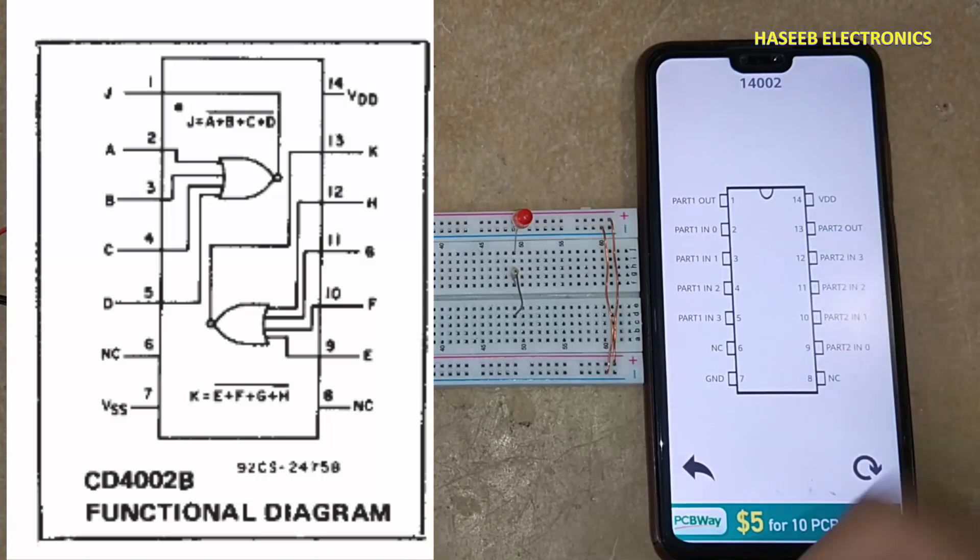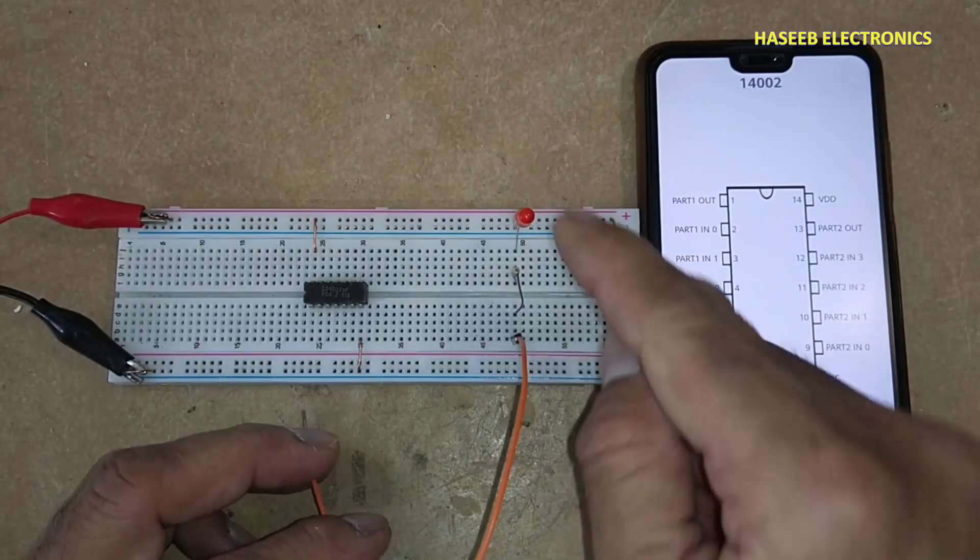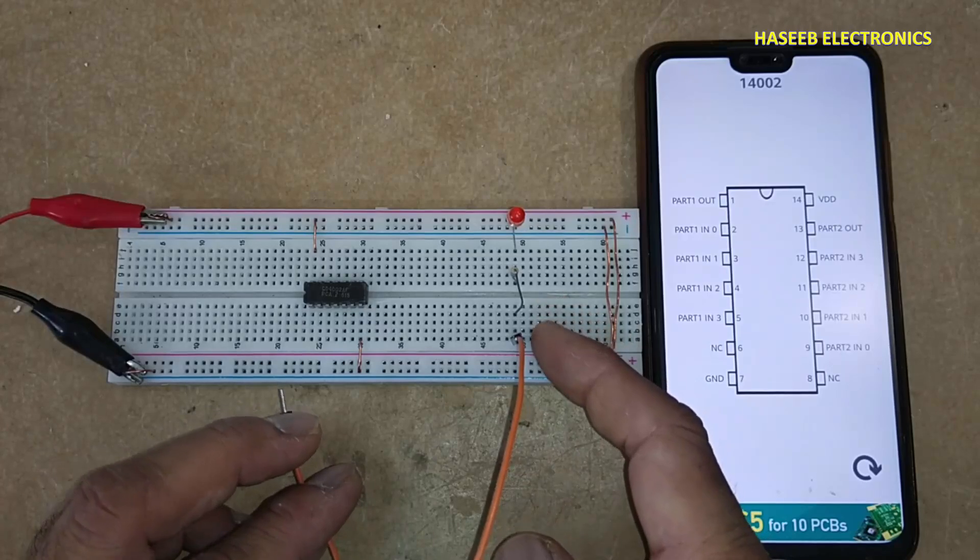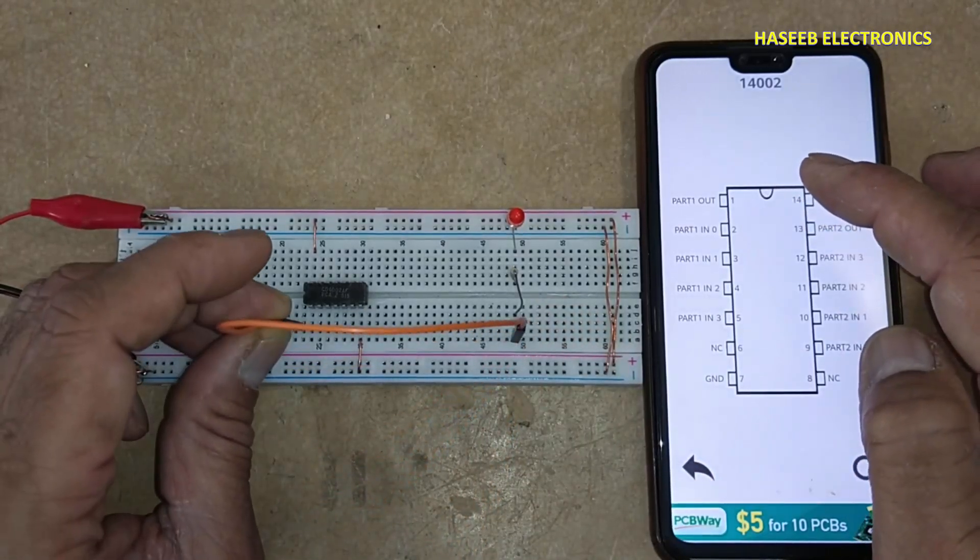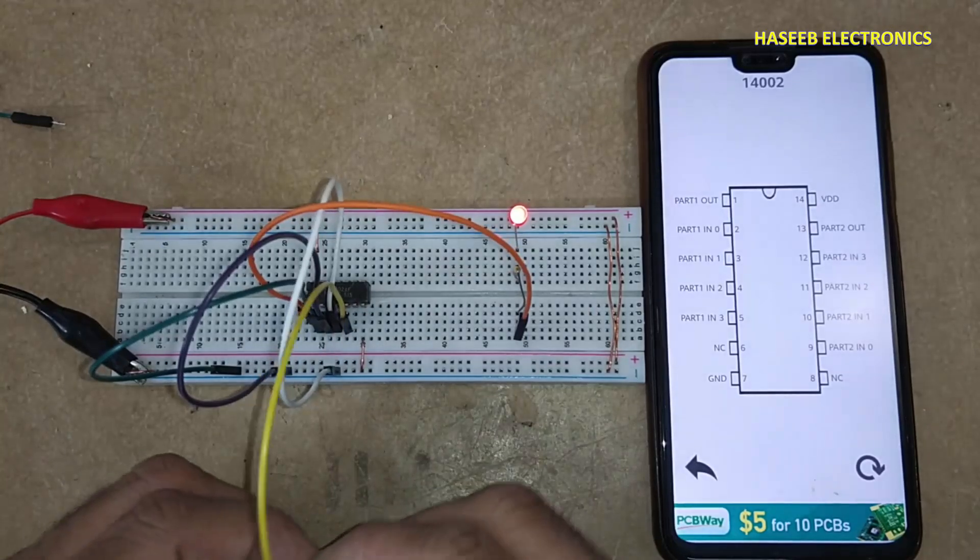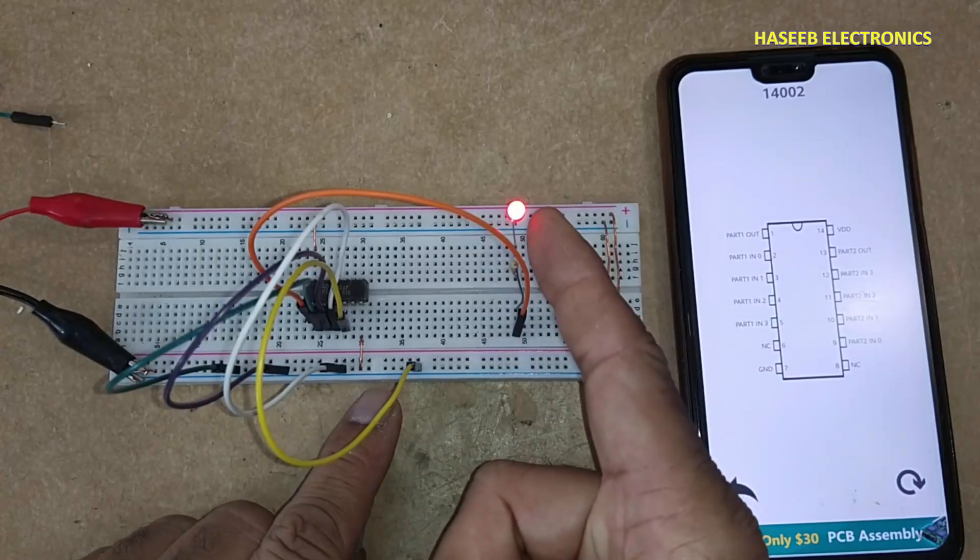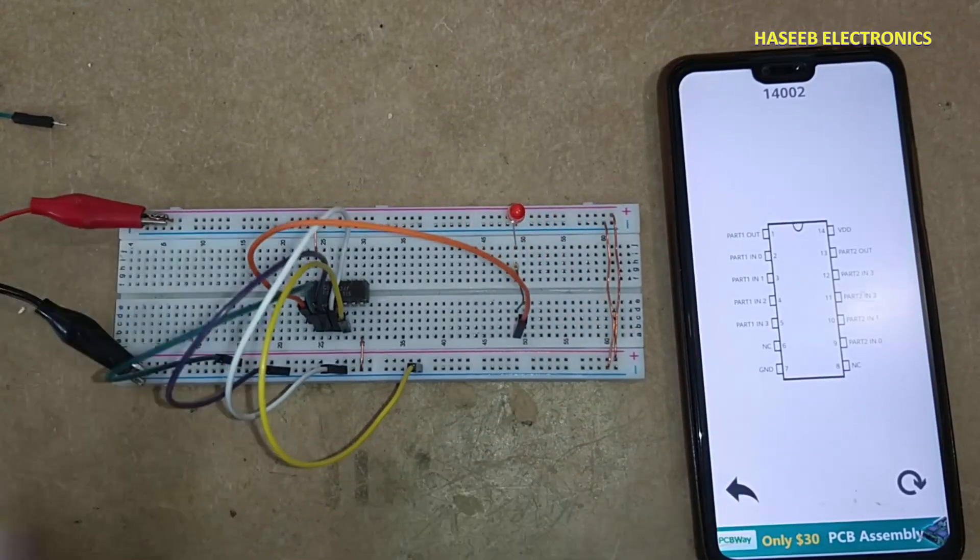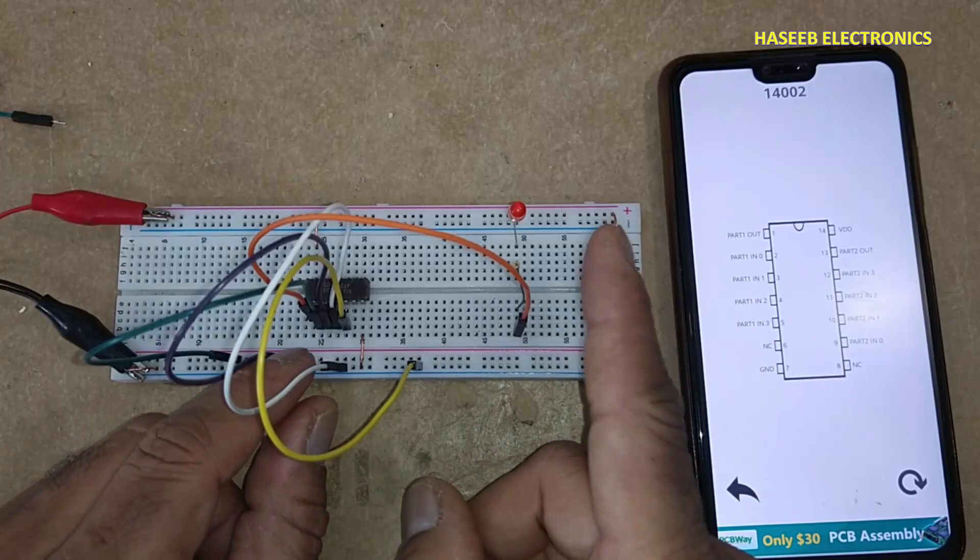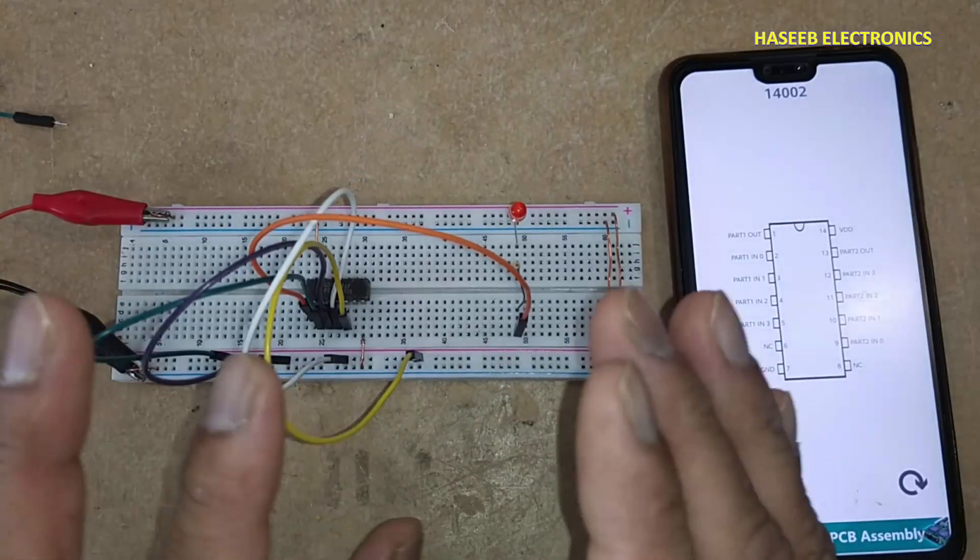I connected 5 volts. To monitor the output, I connected an LED: cathode to ground, anode to 330 ohm resistor. This point connects to pin 1 output. Pins 2, 3, 4, and 5 are the four inputs. I connected all four inputs to low and the output is high. If any input becomes high, output is low. Two inputs high, output low. Three high, output low. Four inputs high, output low.